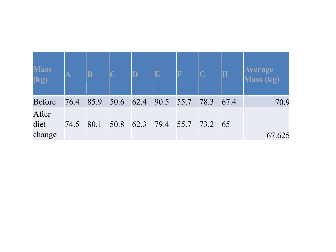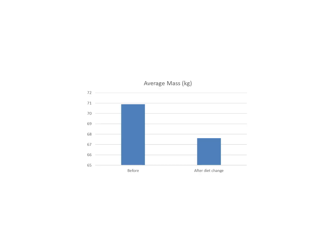The means are the same — 70.9 kg before and 67.6 kg after — but this data means something completely different. It shows that following two months of diet change, the average mass of each individual appears to have gone down. A bar chart can show before and after, but the key question is: is the drop in average mass significant, or could it be due to chance?